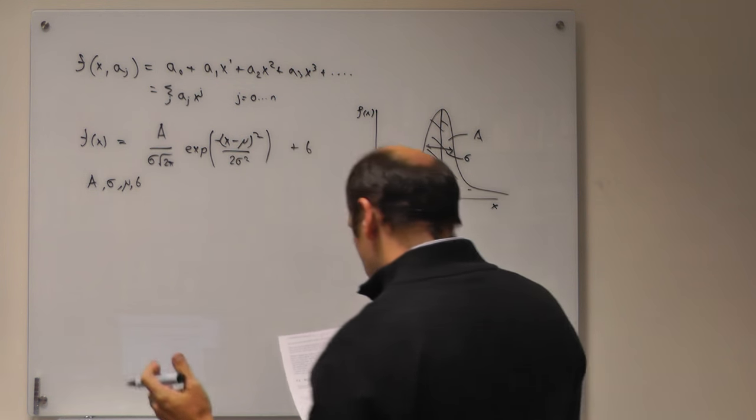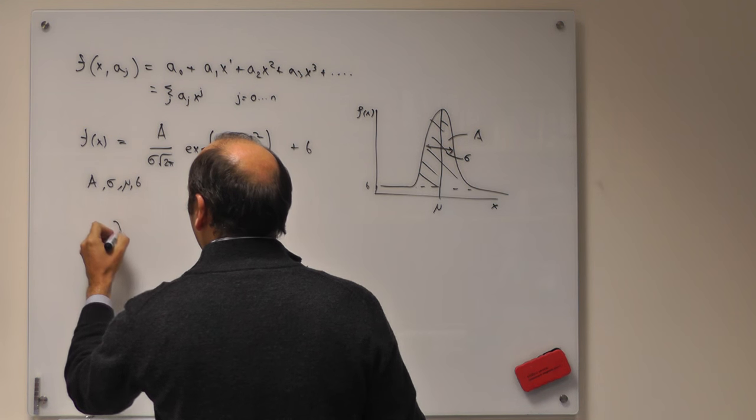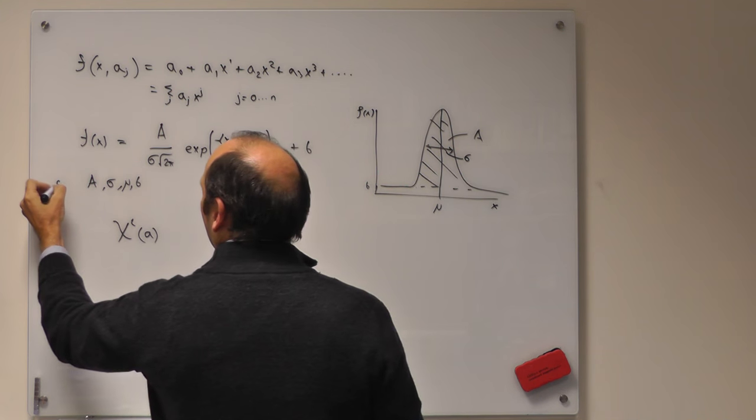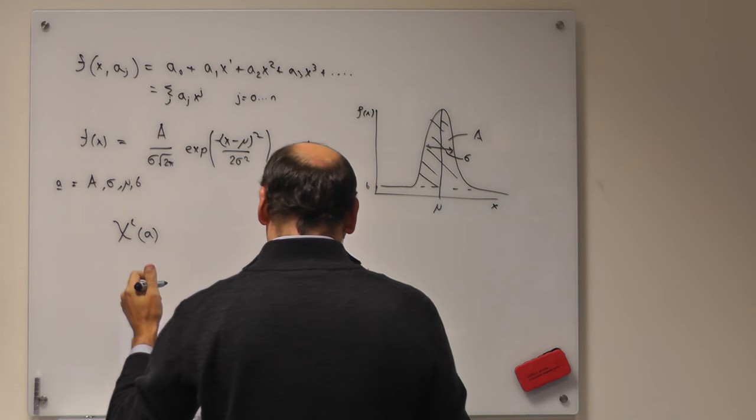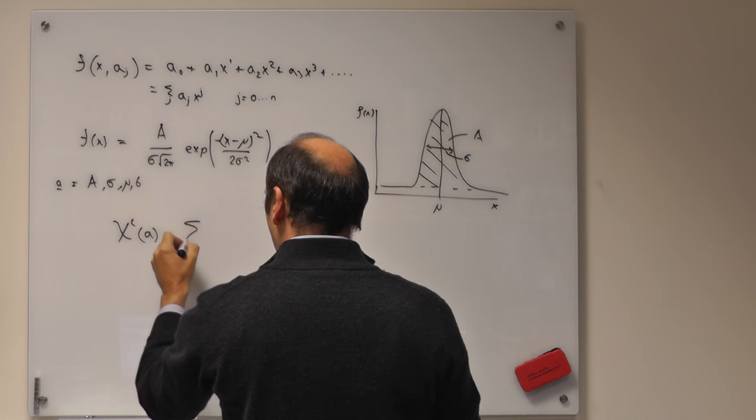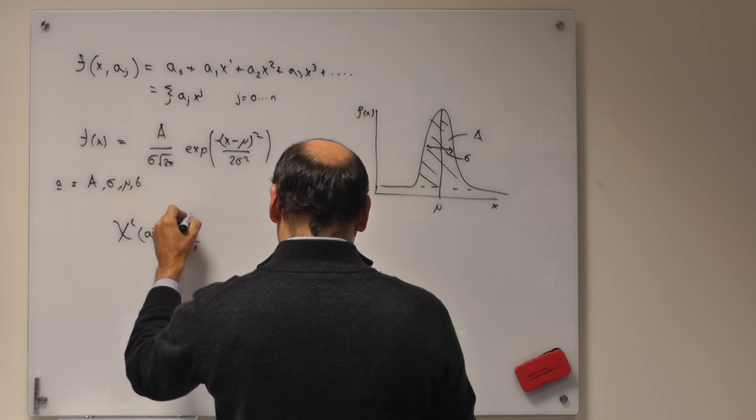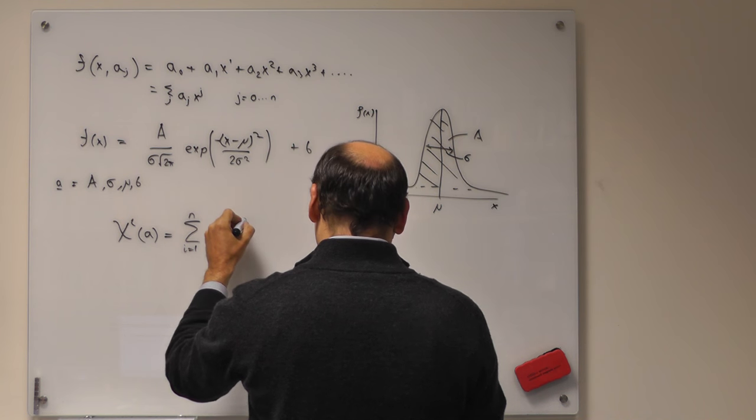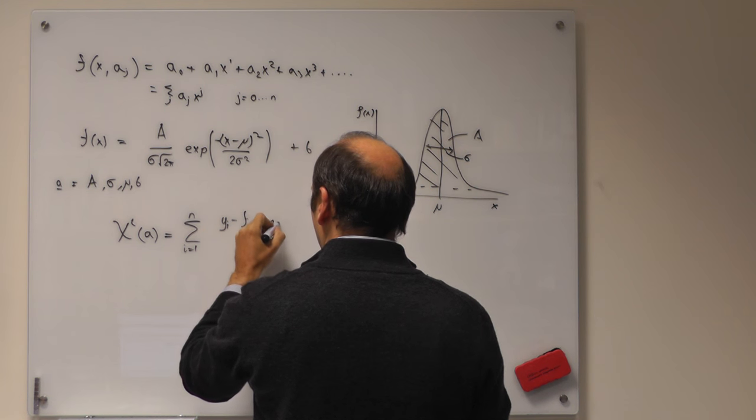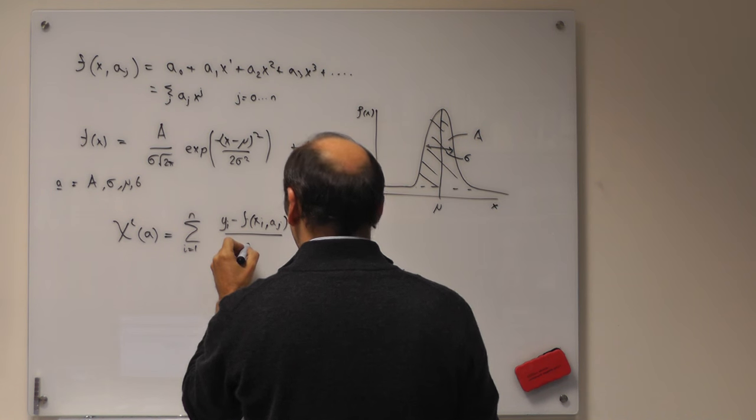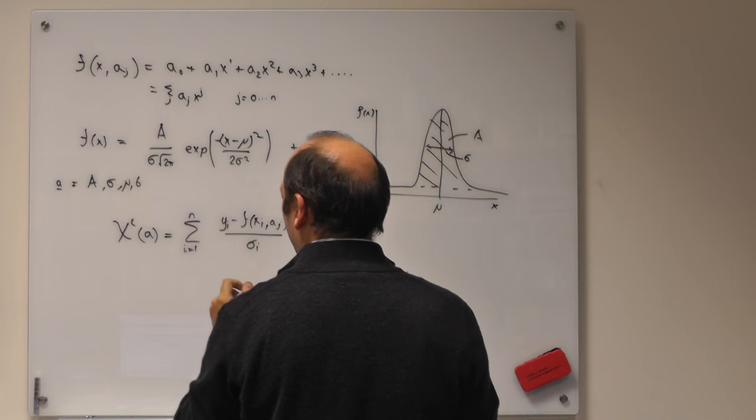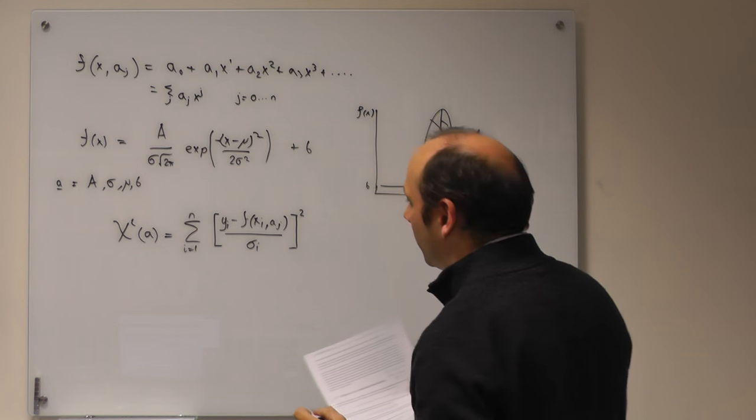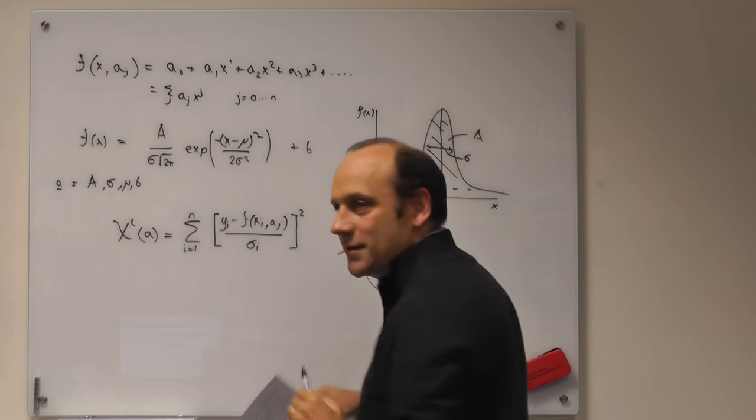To do this, what we do is we define a thing called chi-squared. I'm going to write down what that is, chi-squared of our coefficients a. So in that case they were those guys. We'll say that chi-squared is the sum over all the observed data points i equals 1 to n of the residual, what's left, the difference between the observed point and the value of f of x at that point i, divided by a sigma, and that's a different sigma to this one I'm sorry, but that's the convention, squared.